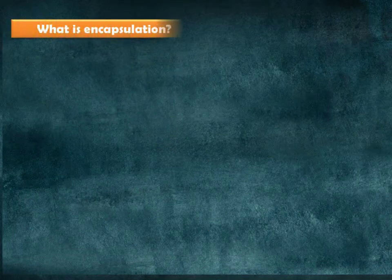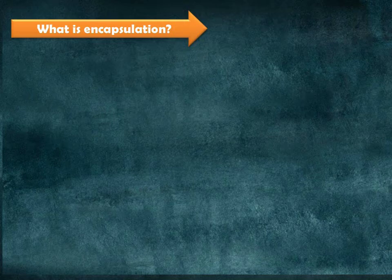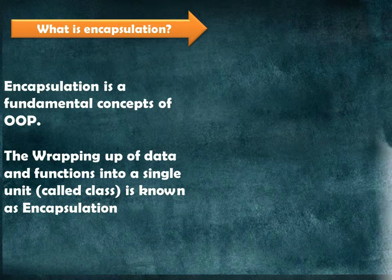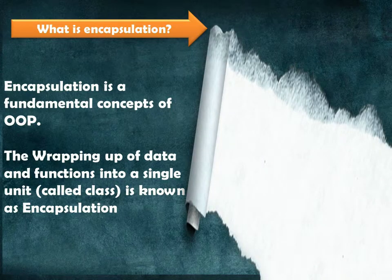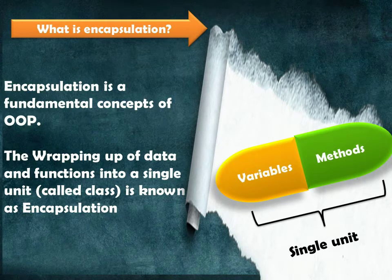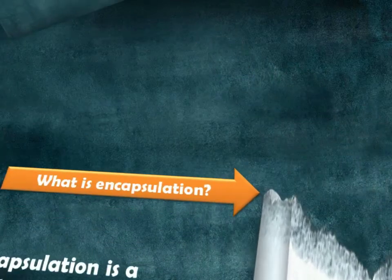What is encapsulation? Encapsulation is a fundamental concept of object-oriented programming. It helps the programmer in concentrating on the relevant details and makes the classes independent so they can be reused without modification in other programs. The wrapping up of data and functions into a single unit is known as encapsulation.